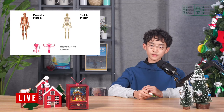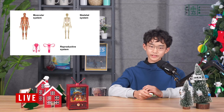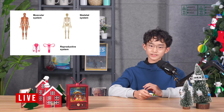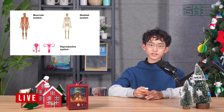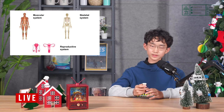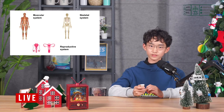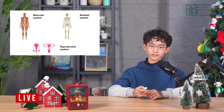The last system is the reproductive system. This system allows species to not go extinct. When a male sex cell and a female sex cell join together, this process is called fertilization. During this process, they create a new cell called a zygote, and the zygote is where a new life begins.